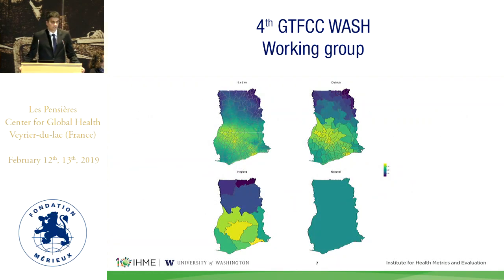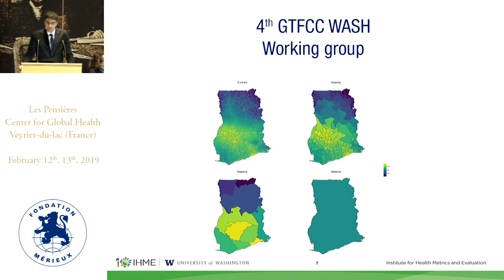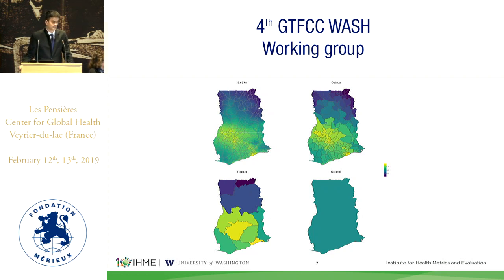Here is Ghana in 2015 with access to improved sanitation. In the lower right-hand corner is the national-level estimate of 65%, the type of estimate typically available in a country report. Then you have region-level estimates from DHS and MICS, showing significant heterogeneity — southern regions have better access, where most of the population is. Breaking that down into districts, there is a pattern within states. Going further to the five-by-five kilometer level, you can make out the urban-rural gradient well documented in the WASH literature — even within districts, there is spatial heterogeneity in access to water and sanitation services.